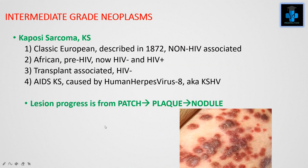Now moving on to intermediate grade neoplasms, we have Kaposi sarcoma. Classic Kaposi sarcoma was first described in Europeans in 1872, in non-HIV associated patients. It also occurs in African pre-HIV populations and can be HIV-negative or HIV-positive. Transplant-associated Kaposi sarcoma is HIV negative, while AIDS-associated Kaposi sarcoma is caused by human herpesvirus 8 (HHV-8/KSHV). In Kaposi sarcoma, lesions progress from patch to plaque and finally into nodules.